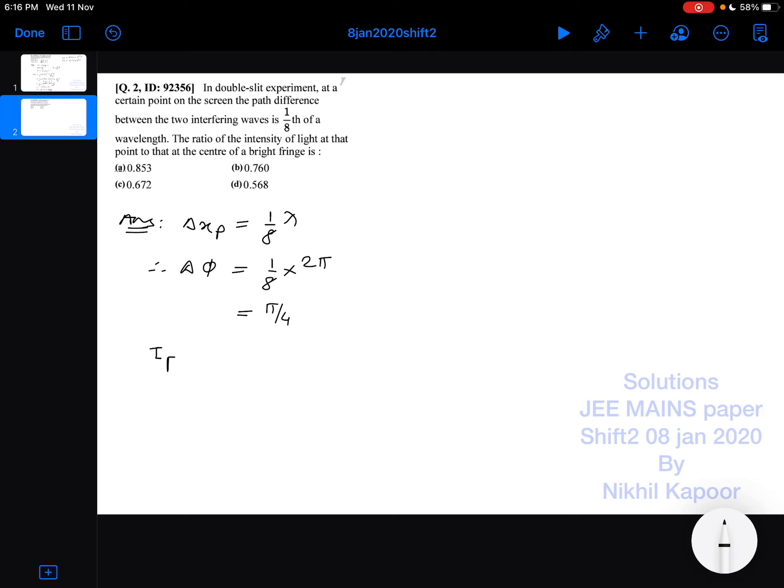So the ratio of intensity at that point to intensity at central bright point, that is maximum. So the resultant intensity is given by i plus i plus 2 root i into i cos pi by 4